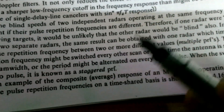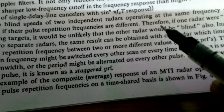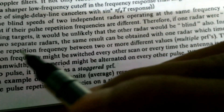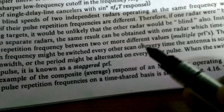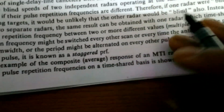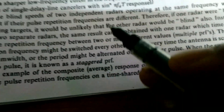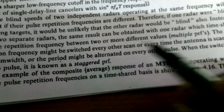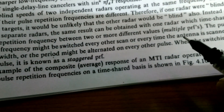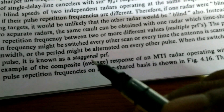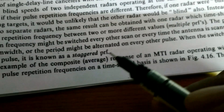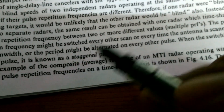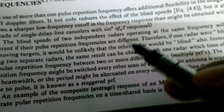Since the blind speeds of two independent radars differ when their PRFs differ, there is no need to use two separate blind-speed radars. Instead, one radar operating at multiple pulse repetition frequencies achieves the same effect, reducing the blind speed problem. The pulse repetition frequency might be switched every time the antenna scans a beamwidth or period. This switching action is called staggered PRF.